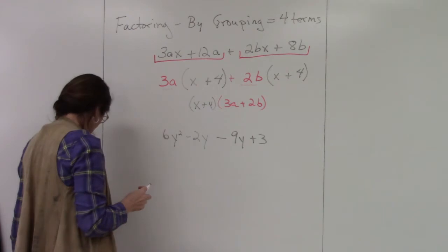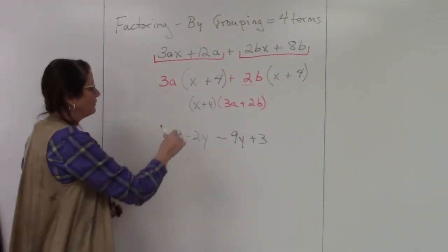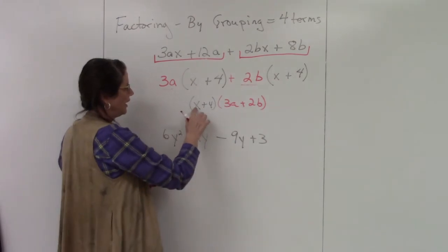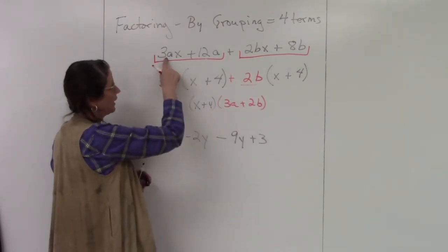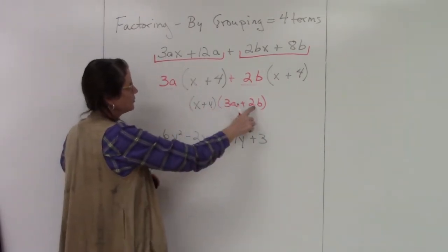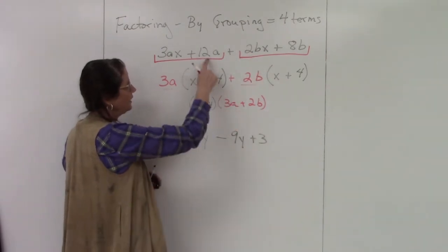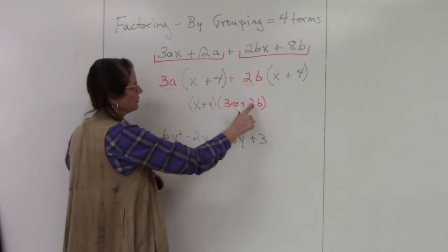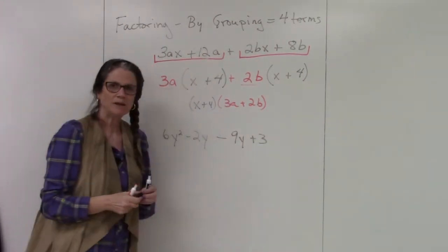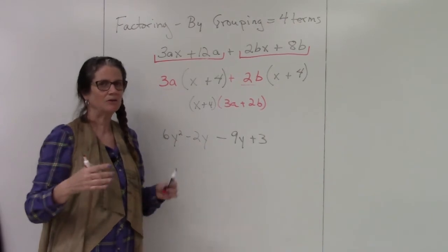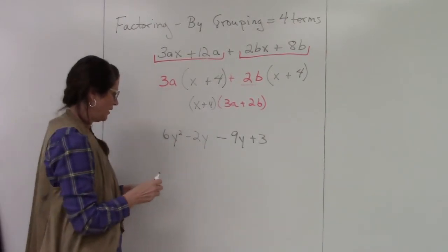To check this, if I were to FOIL this, I'd end up right back where I started. x times 3a is 3ax, x times 2b is 2bx, 4 times 3a is 12a, and 4 times 2b is 8b. So always double check—it doesn't take very long to mentally go back through and multiply.